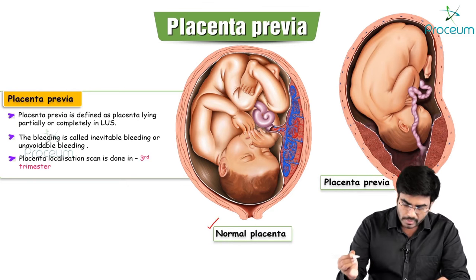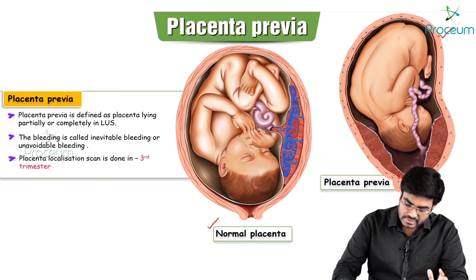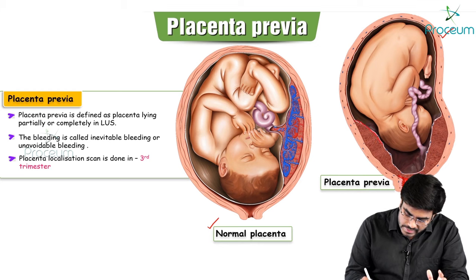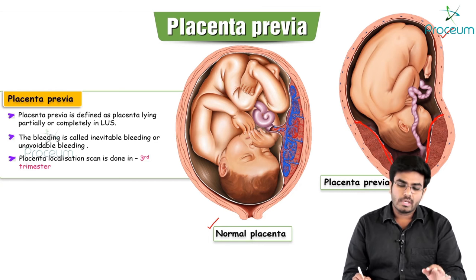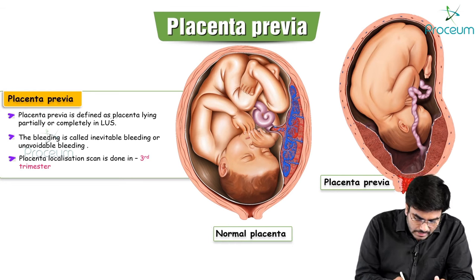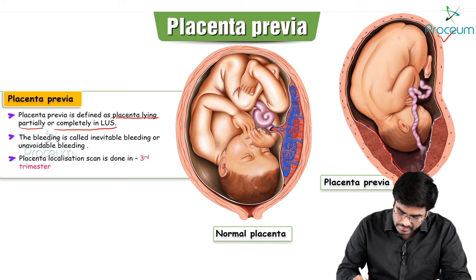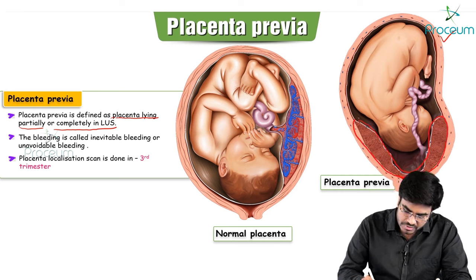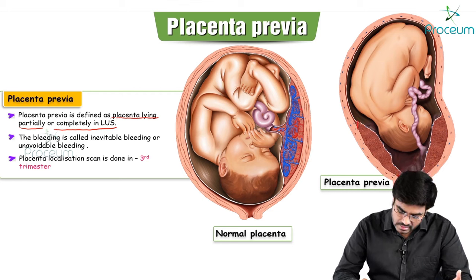In a normal uterus, the placenta is properly localized. Placenta previa is defined as the placenta lying partially or completely in the lower uterine segment. In the image shown, the placenta is completely in the lower uterine segment, completely obstructing the baby's delivery and closing the entire internal cervical os.